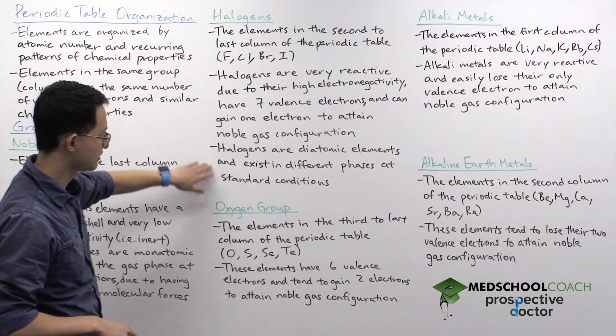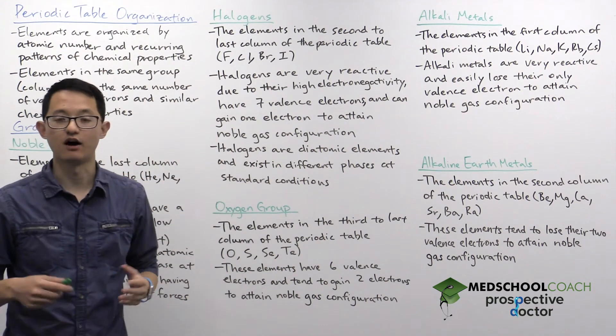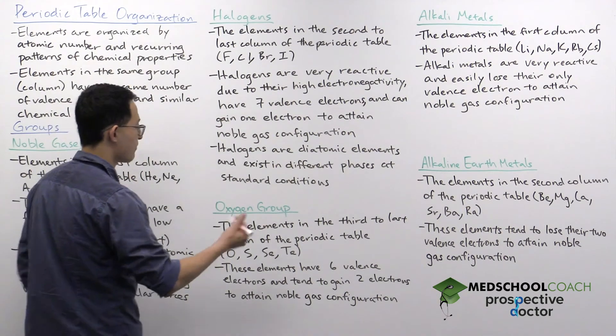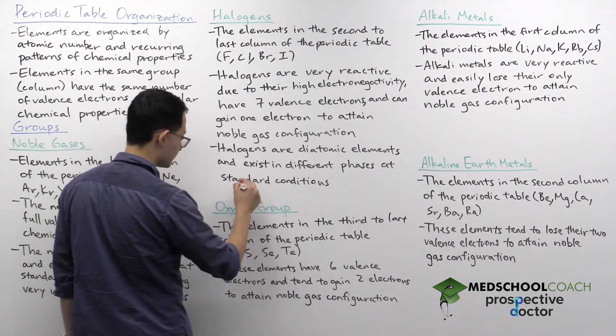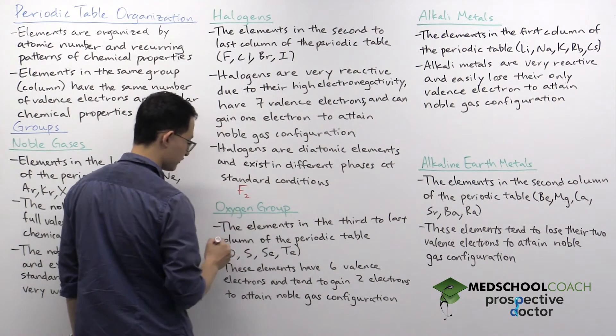So halogens, in terms of physical properties, they are diatomic elements, which means unlike our noble gases, they exist in pairs. So that means if you're looking at halogens in nature, you're not going to see individual fluorine atoms.